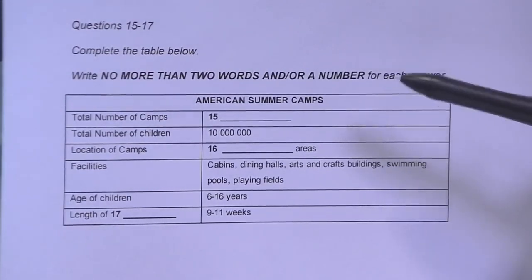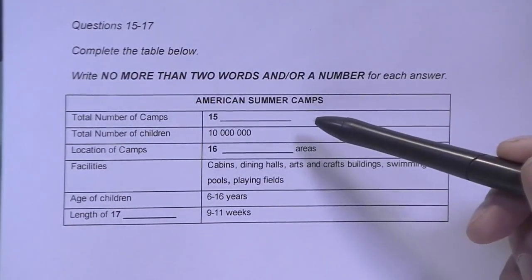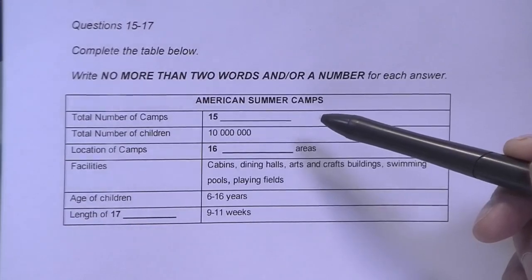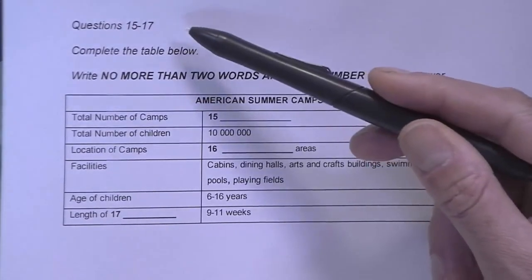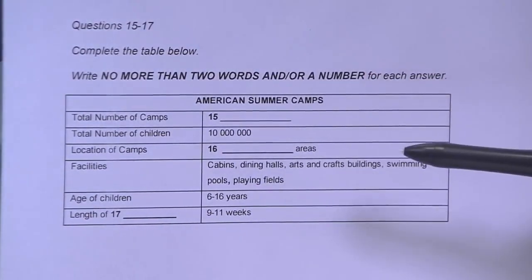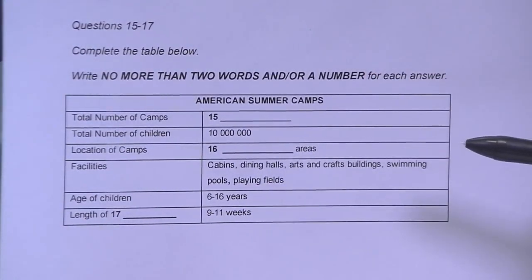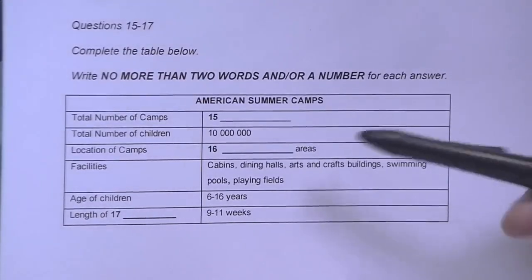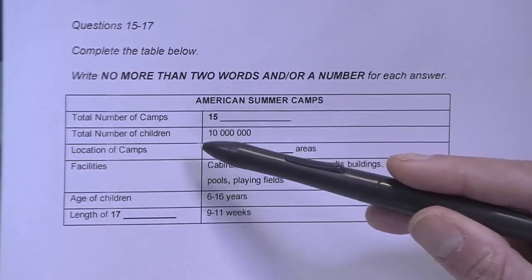And here are the gaps you need to complete. In this example, for questions 15 to 17. In the case of a table like this, each gap must complete an accurate description of the heading that it relates to.